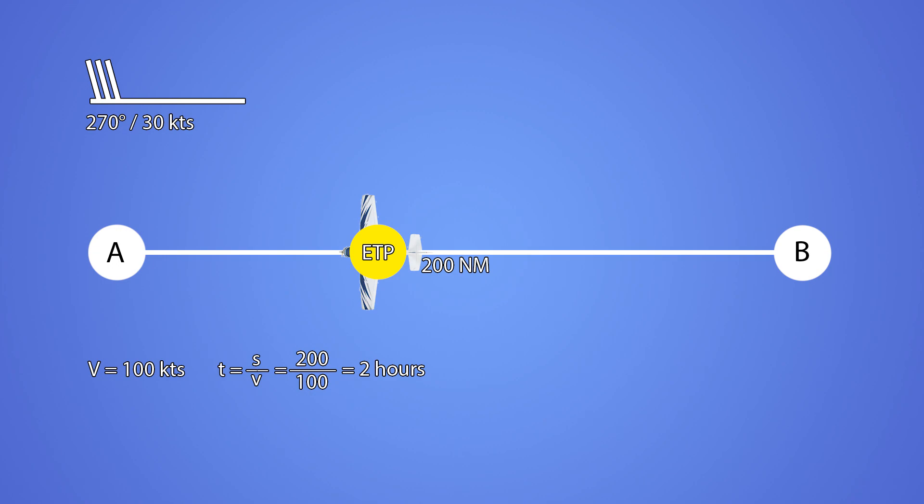Let's start by defining what we already know. We have a true airspeed of 100 knots with a tailwind on the way down and a headwind on the way back. We can define these two speeds as Vc and Vr. Since it's pure tailwind and headwind, the speeds would be 130 and 70 knots respectively.